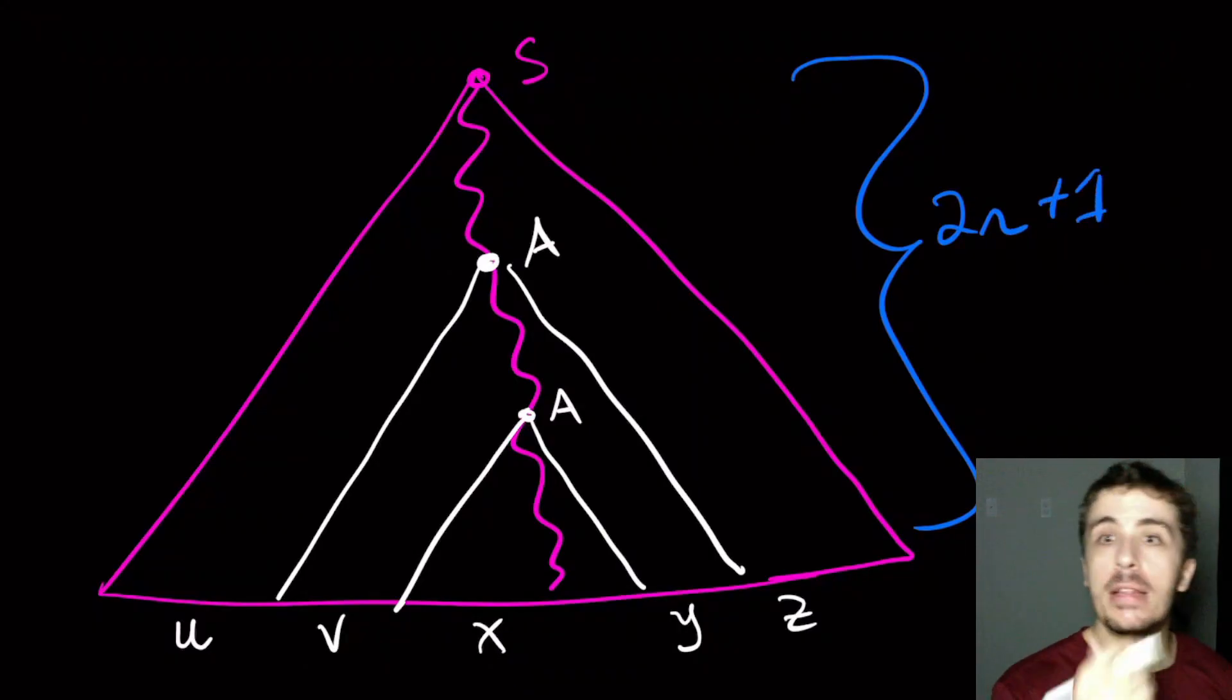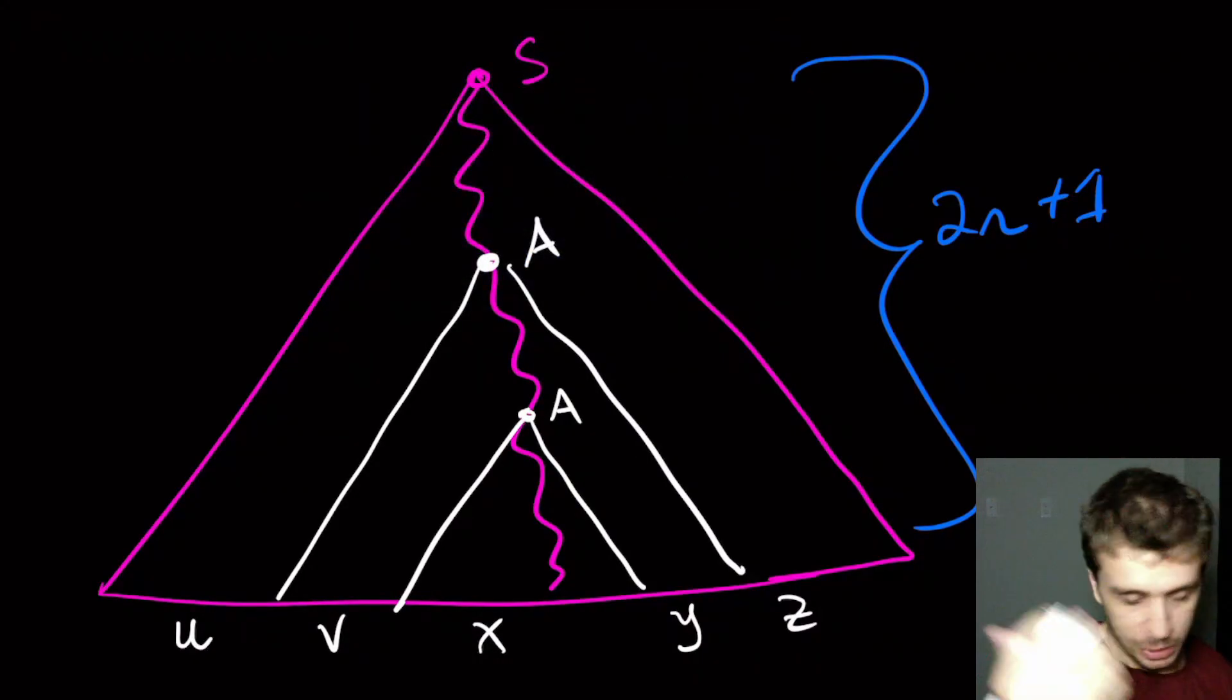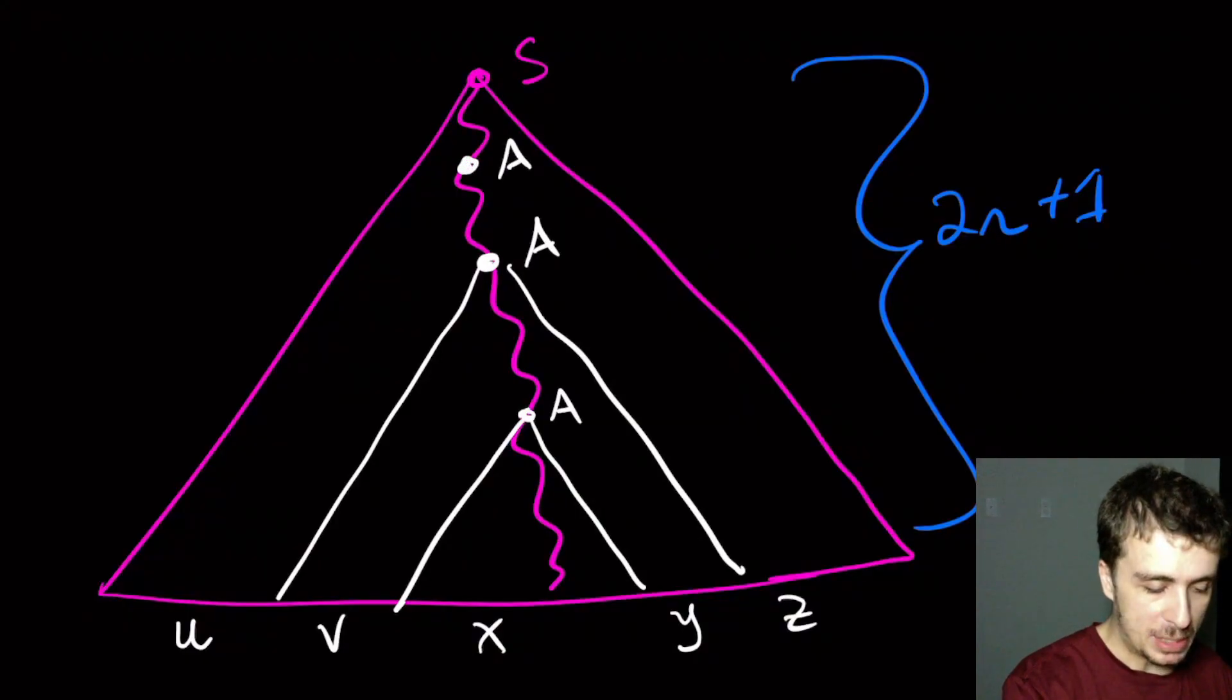It can't be s because s can't repeat. So therefore there must be some occurrence of a, some variable I'm going to call it a, maybe it's the same one, maybe it's different, that must have occurred three times. And what we're going to do then is we're going to throw away that middle occurrence of a.